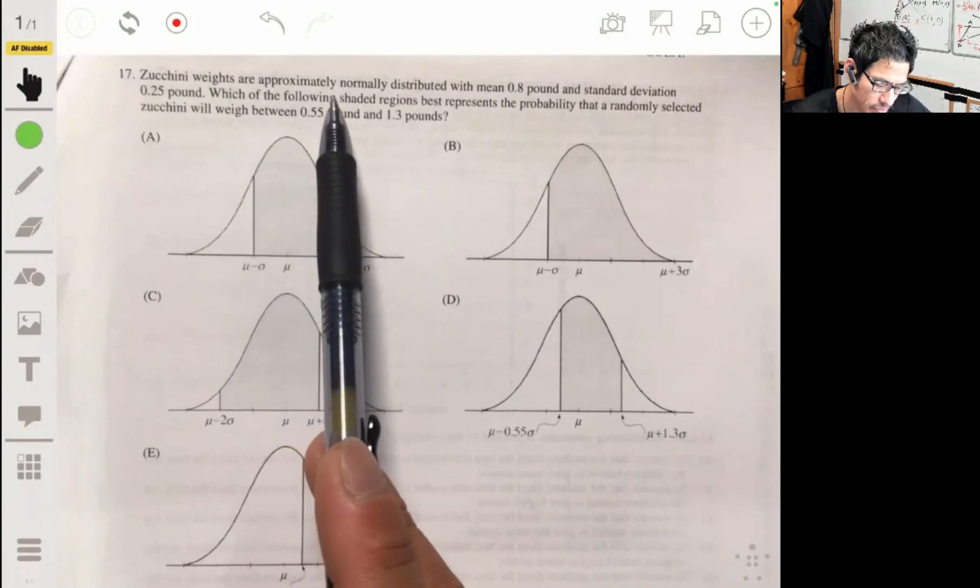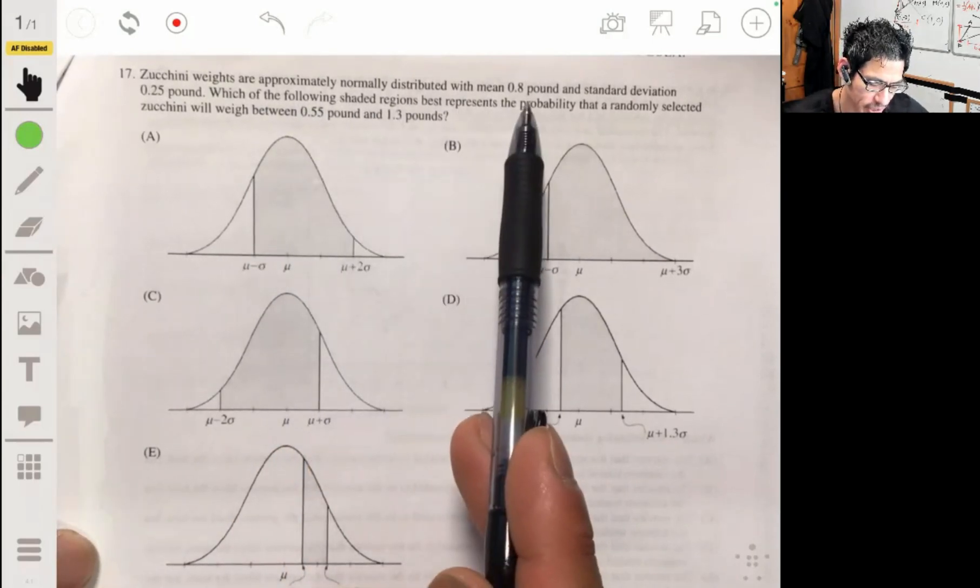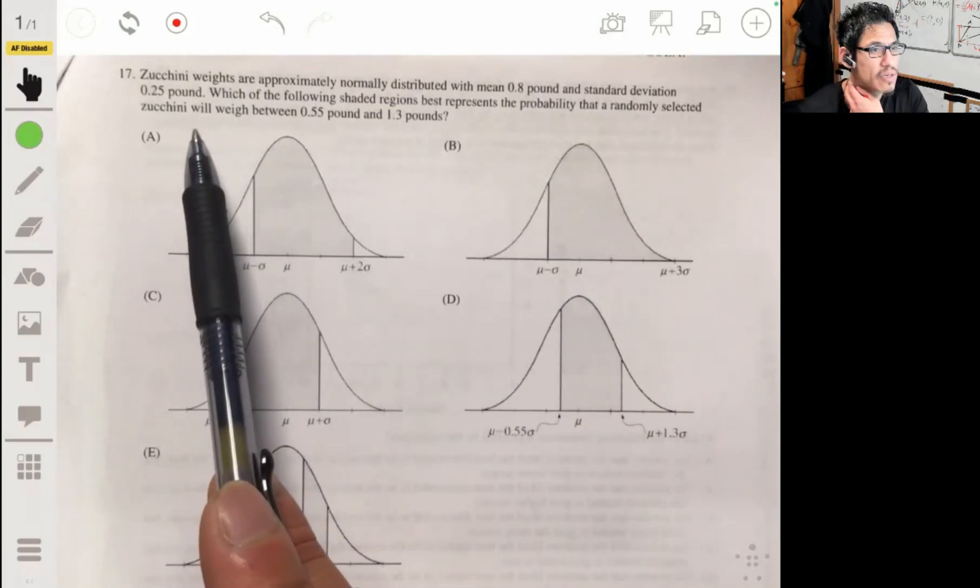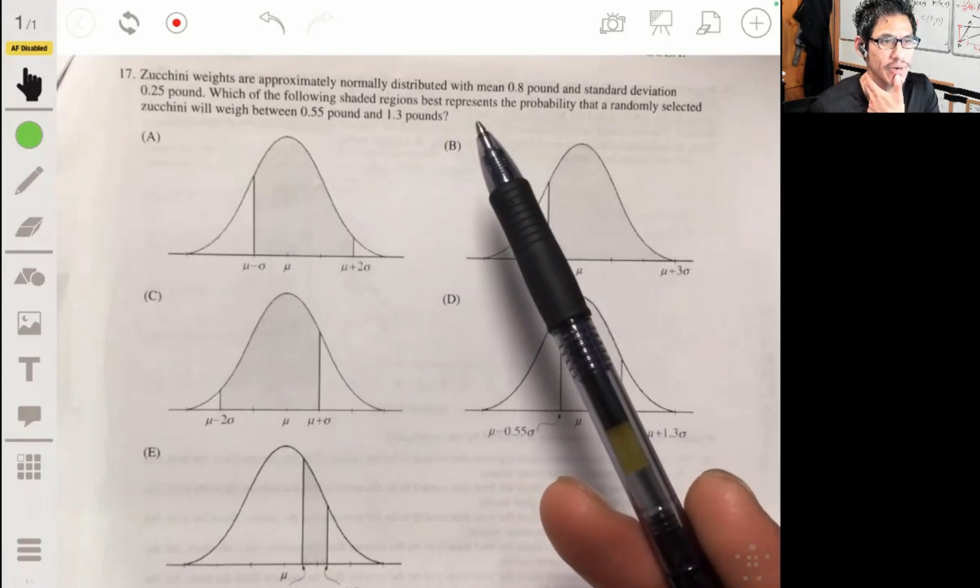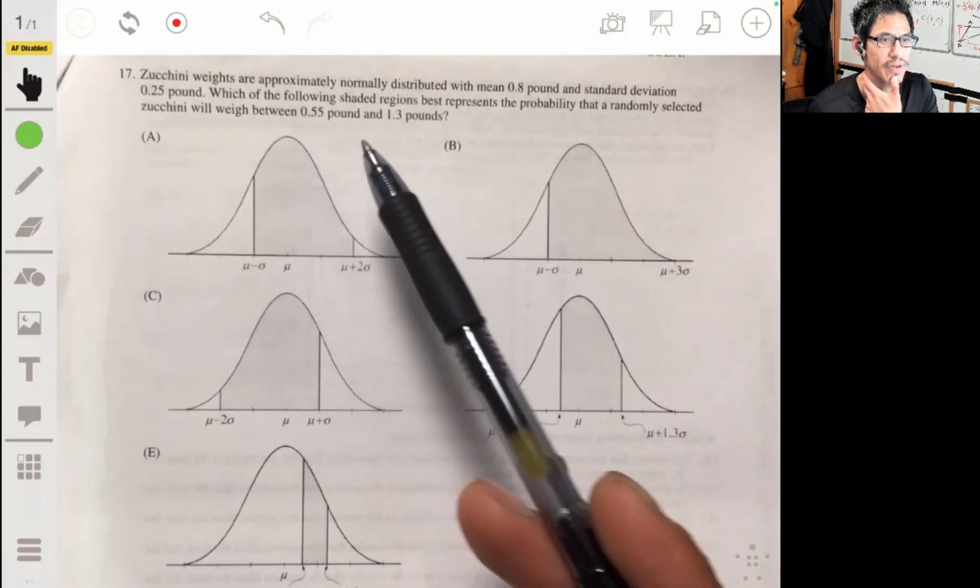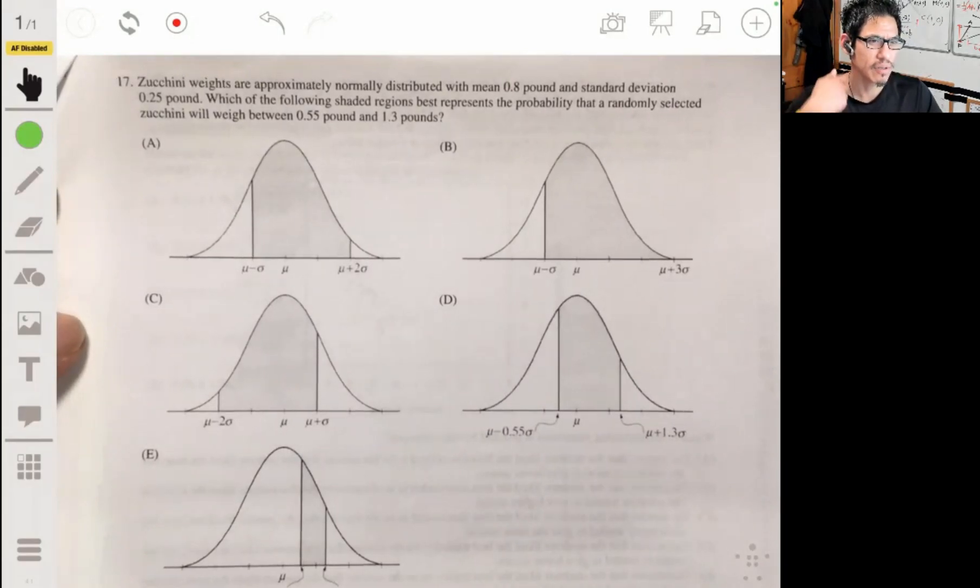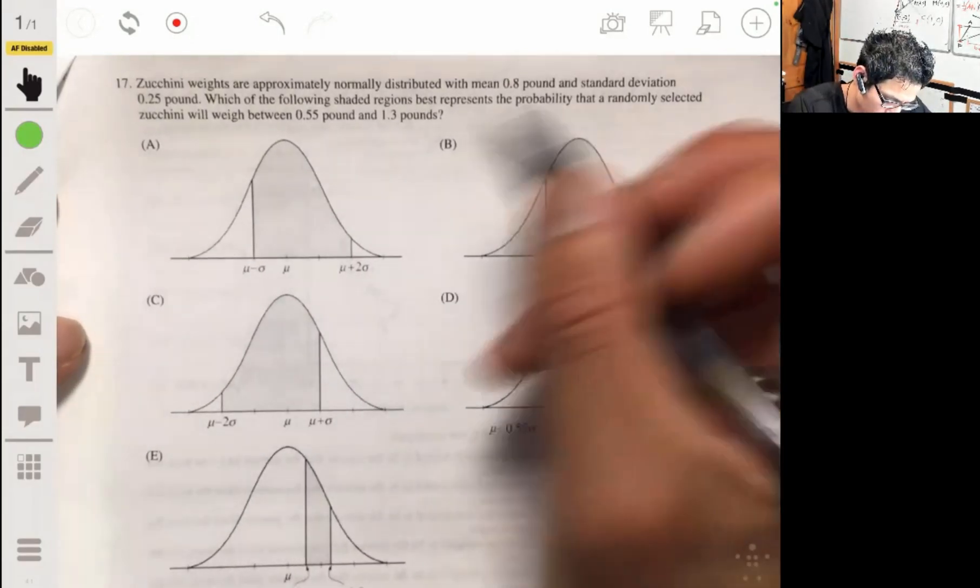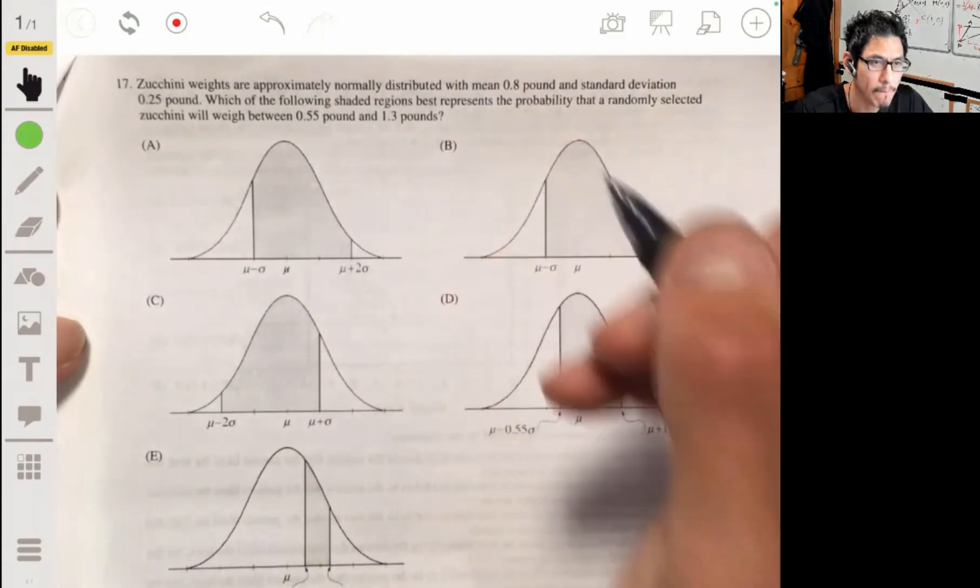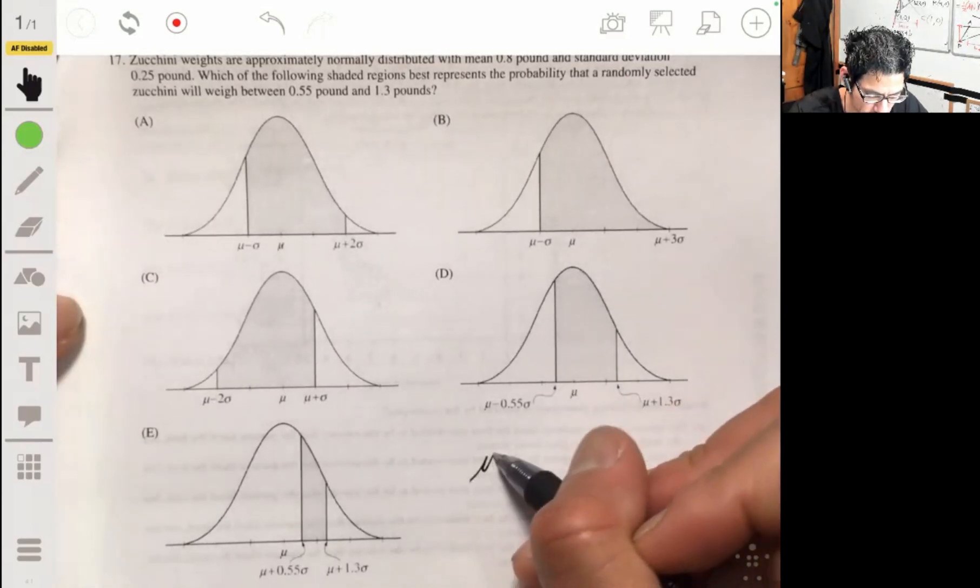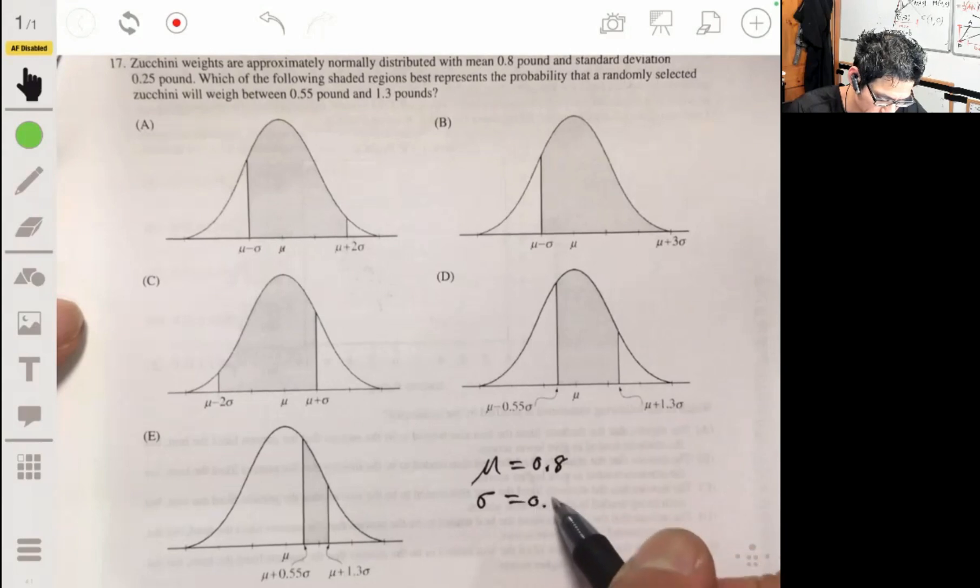Alright, 17. Zucchini's weigh. The zucchini weights are normally distributed with the mean of 0.8 pounds and standard deviation of 0.25 pounds. Which of the following shaded regions would best represent the probability that randomly selected zucchini will weigh between 0.55 pounds and 1.3 pounds? This is an interesting one.